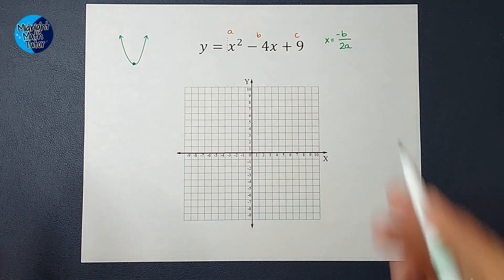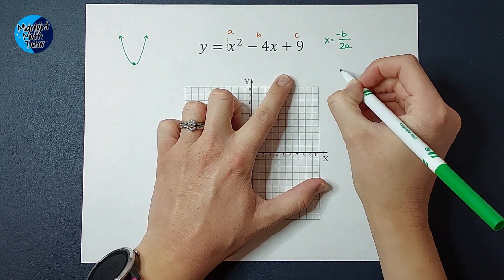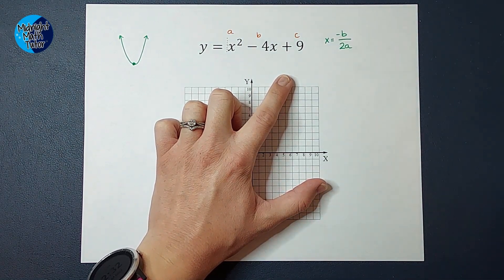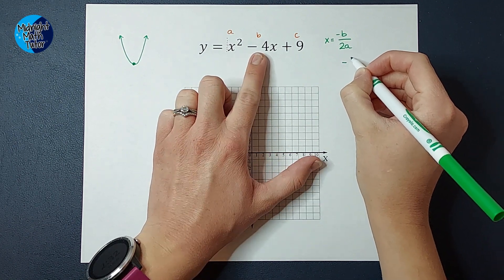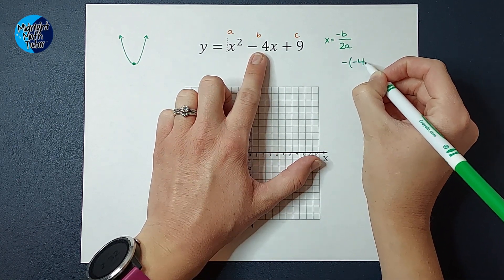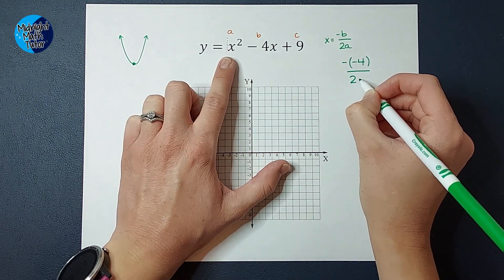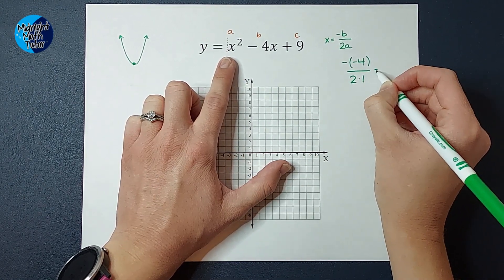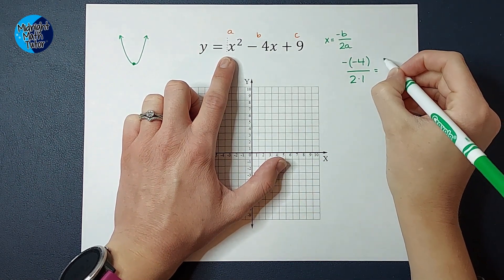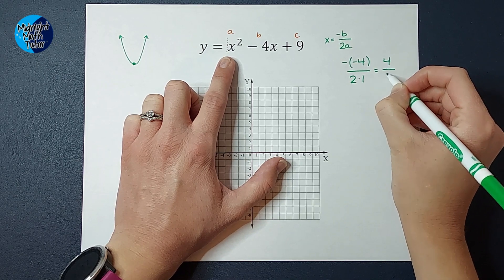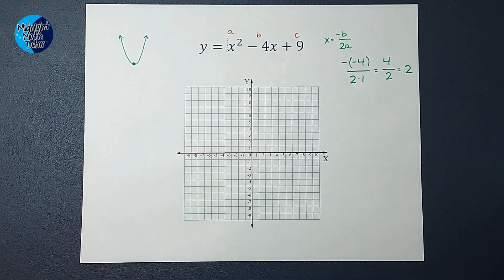So if I plug this in, I'm going to have negative b. So the x coordinate of my vertex is negative b, which b is negative 4. We need to make sure we have both those negatives. Over 2 times a, a is 1. So then I've got negative negative 4, which goes to positive. So 4 over 2 times 1 is 2. 4 divided by 2 is 2.